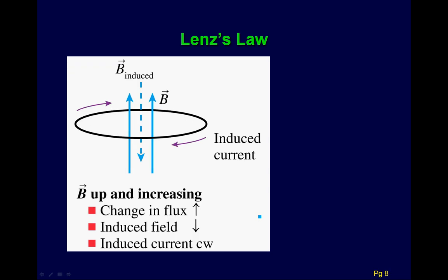Here's the case where the B field is up and increasing. In the initial case, there might be three field lines pointing upward; in the final, four. My thumb wants to go in to cancel that extra one out. If my thumb goes in, that induces a clockwise current — and that's what indeed happens here.